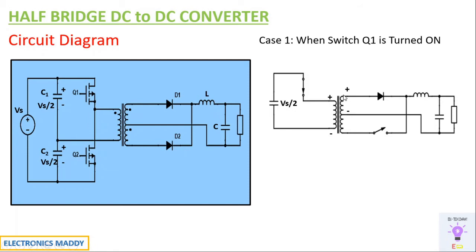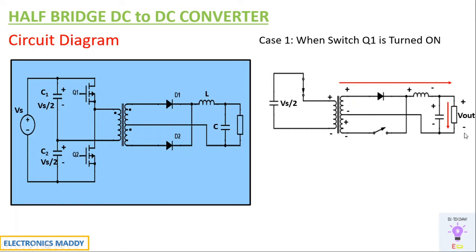The secondary side of the transformer is similar to the push-pull configuration. This will induce an equal amount of voltage in the secondary side based on the turns ratio. The polarity will be plus-minus plus-minus because the dot convention plays an important role — if the dot is on one side, it will be minus and plus on the other. Since minus is connected to one diode, it becomes reverse biased and acts as open circuit, while positive is connected to diode D1, so it is forward biased and acts as short circuit. Current starts flowing, the inductor starts charging with polarity plus-minus, the capacitor starts charging with polarity plus-minus, and the output voltage is plus-minus as current flows from source to load.